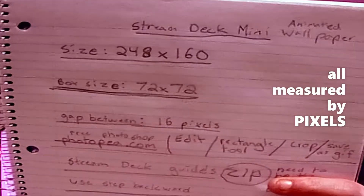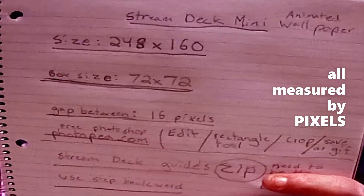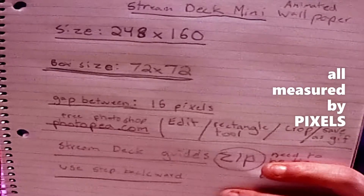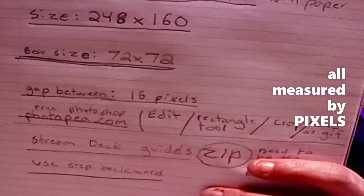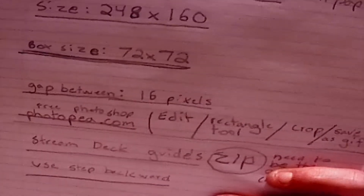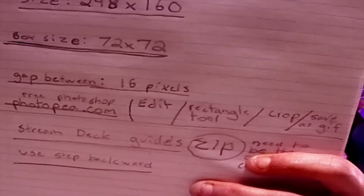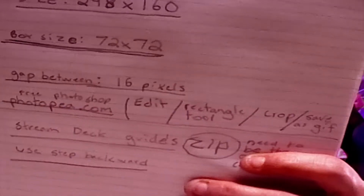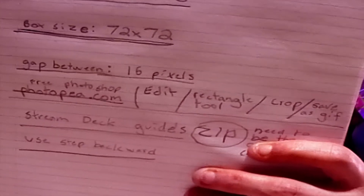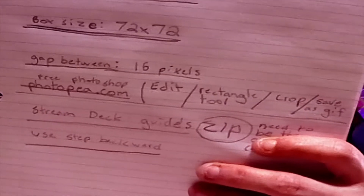It's the sizes by pixels and everything. For example, with the Stream Deck Mini, the size is 248 by 160, the box size is 72 by 72, and the gap between is 16. He uses a free Photoshop program called photopea.com. You edit it, use a rectangle tool, crop them, and save each individual button as a GIF. Basically, you split up the picture — the Stream Deck Mini has six buttons, so you split the GIF into six pictures all the same size. Then you Photoshop it and it makes an animated wallpaper.